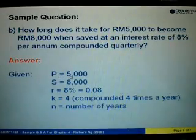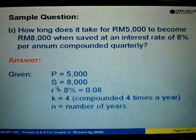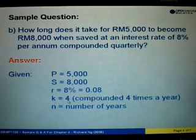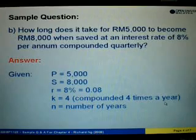We are given the principal as 5,000 ringgit. The accumulated amount is 8,000 ringgit. And the interest is 8%, change it to 0.08 by dividing by 100. K is equal to 4 because the interest is compounded quarterly. Quarterly means compounded 4 times a year. And n represents the number of years which we are asked to find.